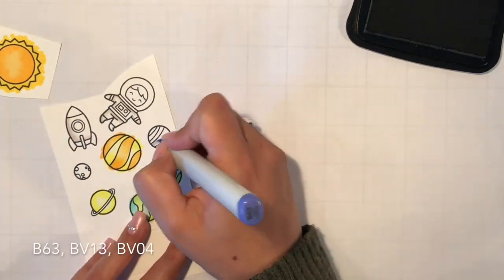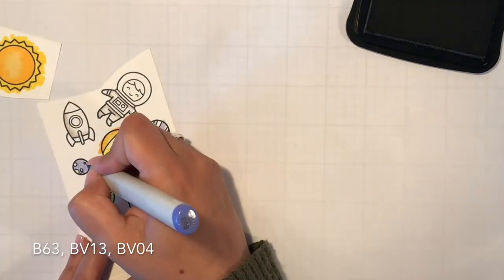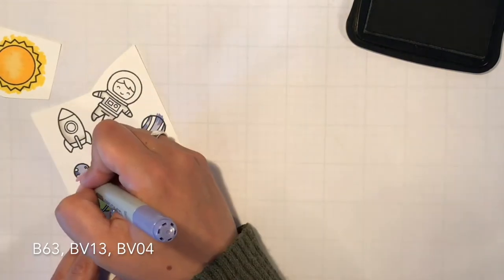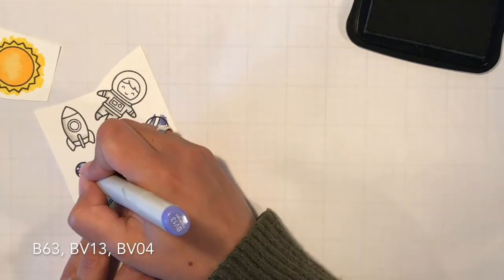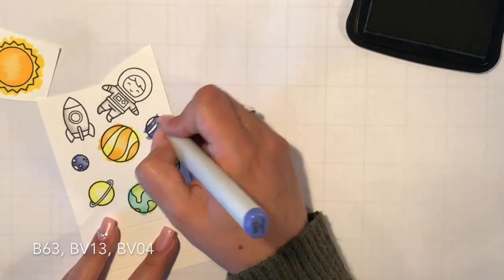All the markers I'm using are listed below in case you want to choose the same color combinations. To color my planets I used some strokes just to give them more texture.